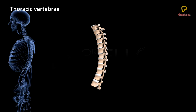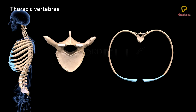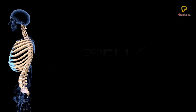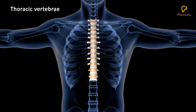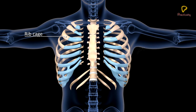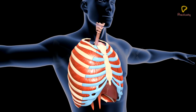Thoracic vertebrae: There are twelve thoracic vertebrae in the thoracic region. The centrum of each thoracic vertebra has a capitular facet on either side for articulation with the capitulum of the rib. Each transverse process bears a tubercular facet for articulation with the tuberculum of the rib. The thoracic vertebrae, along with the twelve pairs of ribs and the sternum, form the rib cage, which protects the heart and lungs and brings about ventilation movements during breathing.